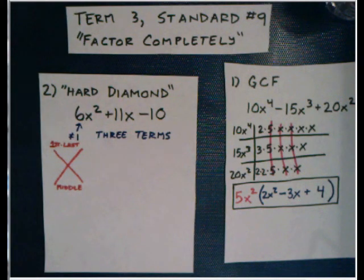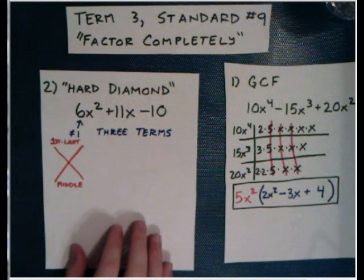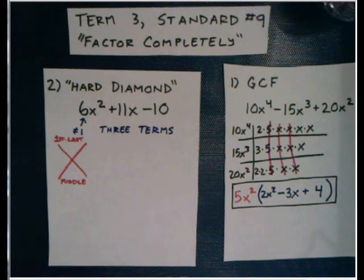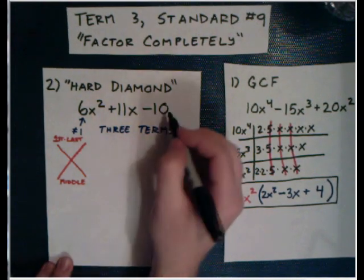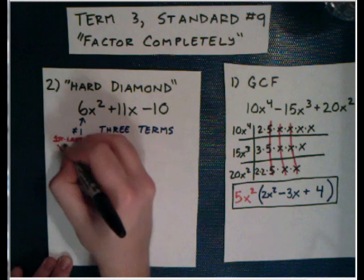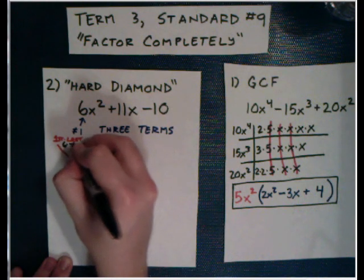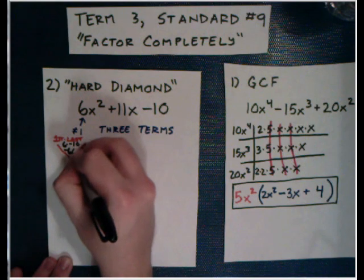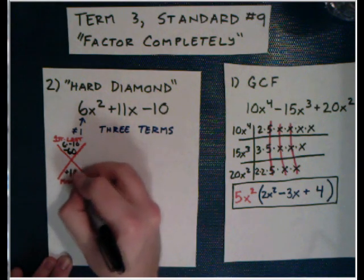In this case, what we're going to end up with—we're going to take these problems directly out of our polynomial. The first number times the last number is going to be 6 times negative 10, so there's the first one times the last one, which is negative 60. And then down here, the middle number is just positive 11.